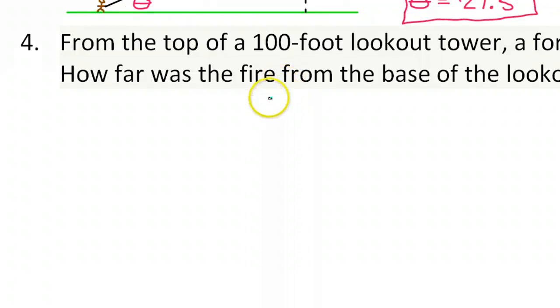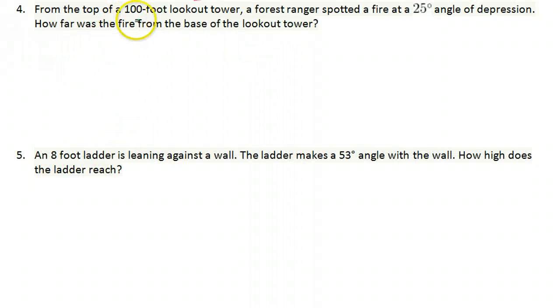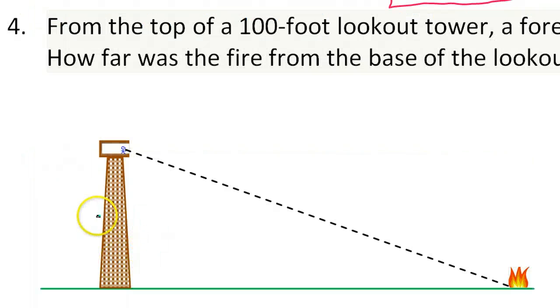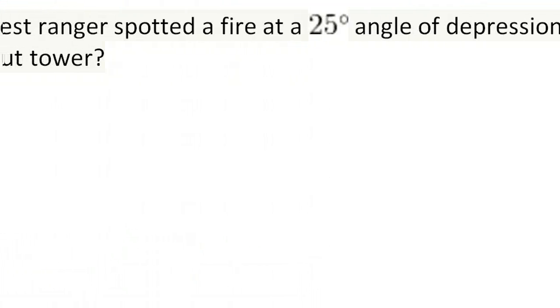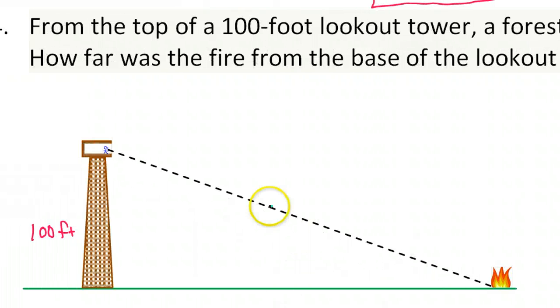Let's take a look at number four. From the top of a 100 foot lookout tower, a forest ranger spotted a fire at a 25 degree angle of depression. How far was the fire from the base of the lookout tower? So here's a picture of what we're dealing with. It's a 100 foot tower, so that's going to be this side of the triangle over here. 25 degree angle of depression.